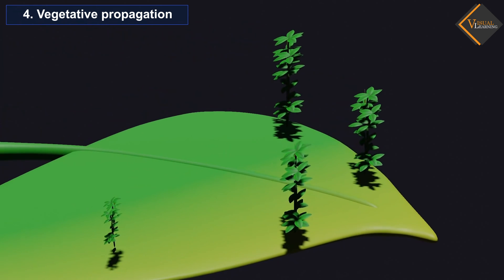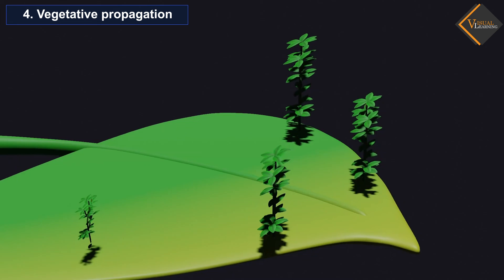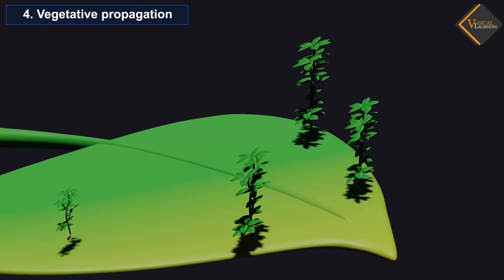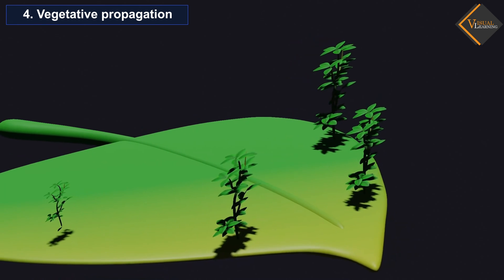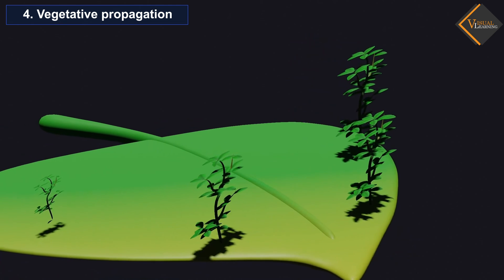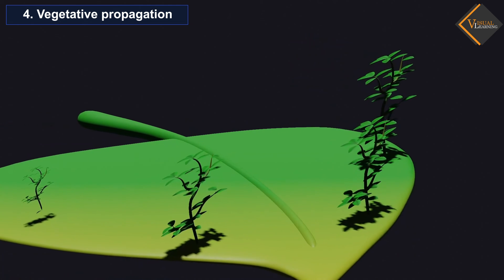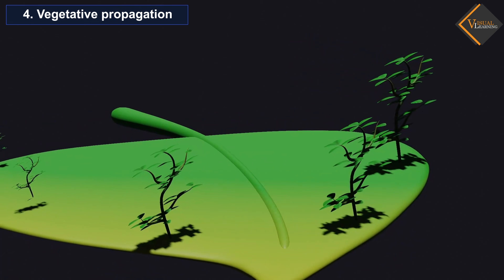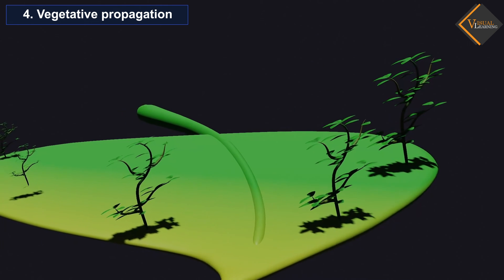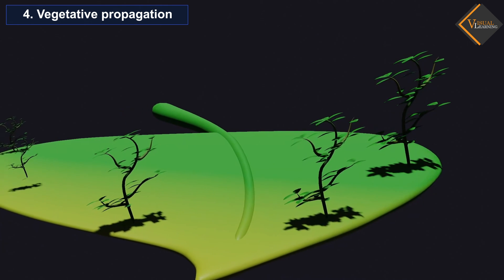There are many plants in which parts like the root, stem, and leaves develop into new plants under appropriate conditions. Plants raised by vegetative propagation can bear flowers and fruits earlier than those produced from seeds.